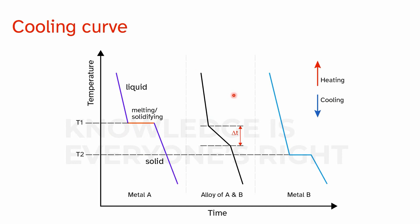Similarly, if you take another metal B whose melting or solidifying temperature is lower than metal A — shown as T2 — you observe the same behavior. If you take molten metal B and cool it, the temperature drops to T2, stays constant while the entire liquid melt turns into solid, and then cools down again.